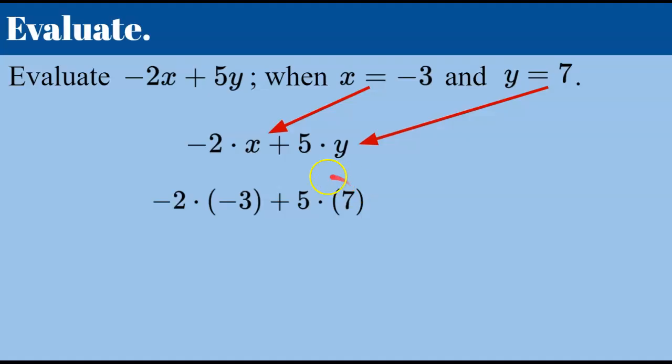Remembering that we're multiplying and then adding the products. So negative 2 multiplied by negative 3 is positive 6, 5 times 7 is positive 35.